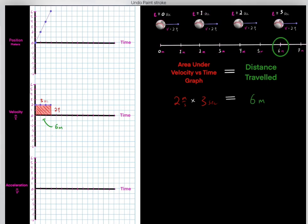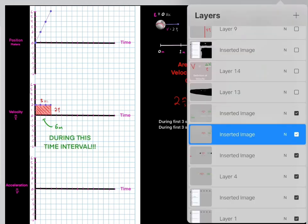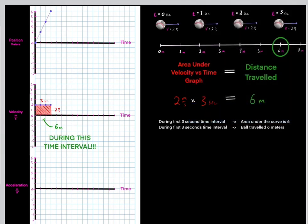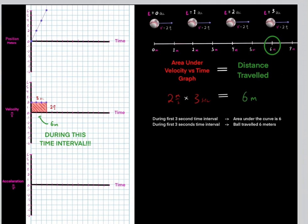We know this because if we look at the position versus time graph, after three seconds we're at the six meter mark. So during this three second time interval, the ball traveled six meters — because that's the area underneath the curve. During this first three second time interval, the area under the curve is six, so the ball traveled six meters.